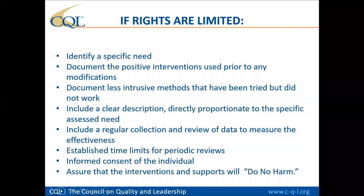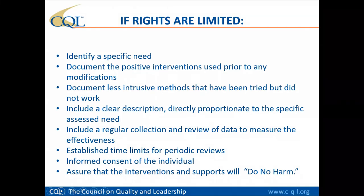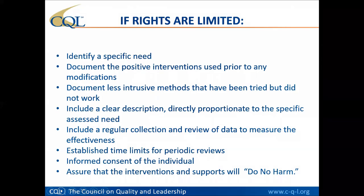It's also very important that if any rights are to be limited, you have really tried some more positive interventions prior to making those modifications. For example, say I have a right to have visitors in my home, but I have demonstrated some poor decision-making with some of my choices and it's caused problems for myself and for other people I live with. The first step would be to think about what positive things you can do to help me learn about what choices I could make and the impact of my choices before you limit and say absolutely, you can no longer have visitors.